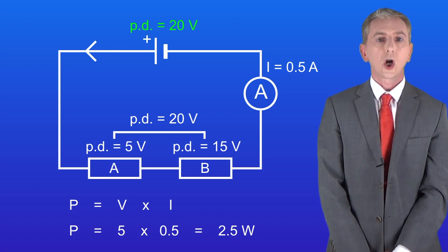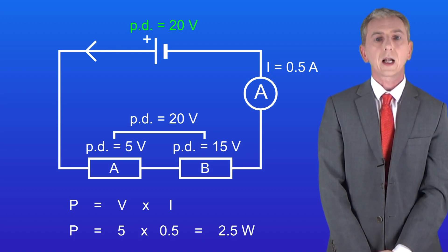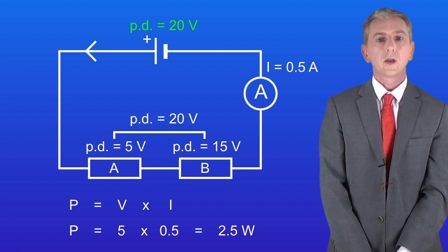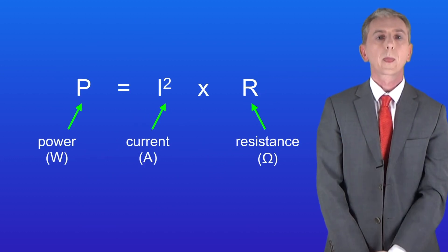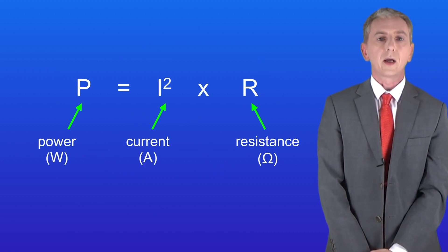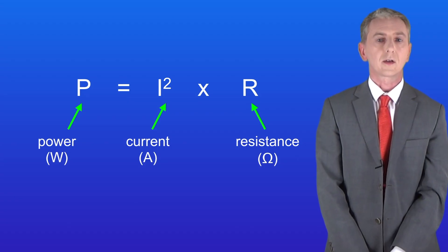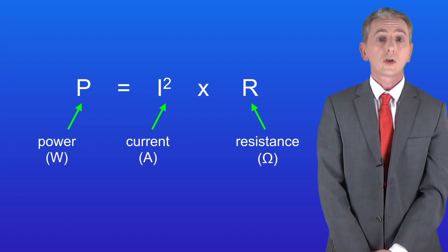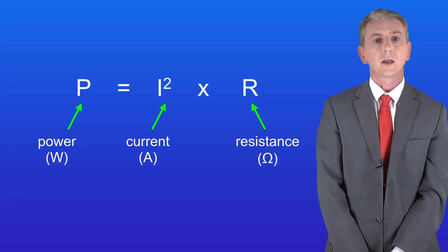If we know the current through a component and the resistance of a component, then we can calculate the power using this equation. The power equals the current squared multiplied by the resistance. Again, you're not given this in the exam so you do need to learn it.